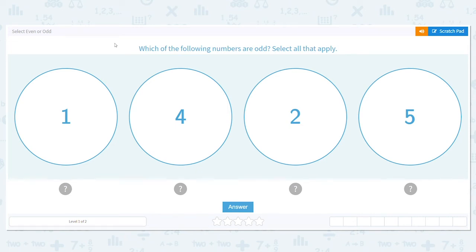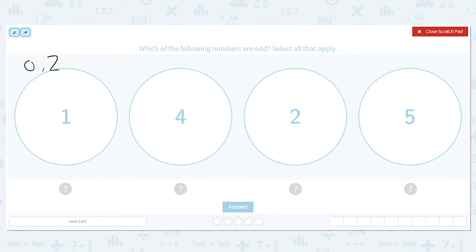Today we are going to practice selecting even or odd numbers. I like to think of even Steven likes numbers that end with zero, two, four, six, or eight.